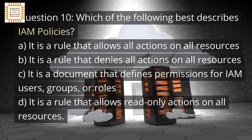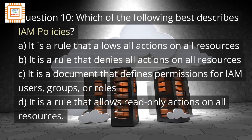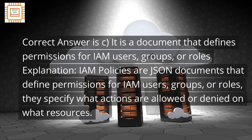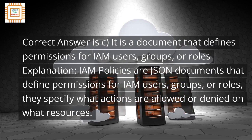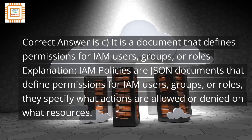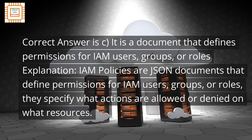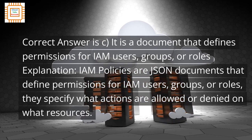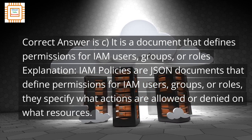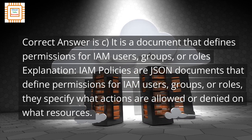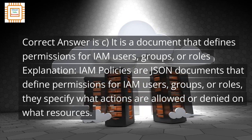The correct answer is C: It is a document that defines permissions for IAM users, groups, or roles. IAM policies are JSON documents that define permissions for IAM users, groups, or roles. They specify what actions are allowed or denied on what resources.